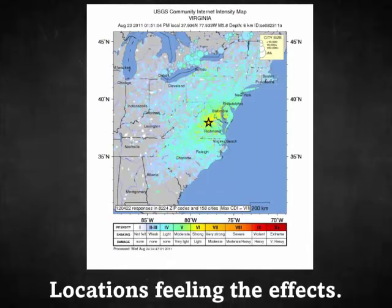This map shows the modified Mercalli scale, indicating the intensity and damage recorded or described by people. Up in East Hampton it was relatively mild — the aqua color, about intensity level 4, classified as light shaking with very little or no damage. Near the epicenter in Richmond it was more of a level 6, a strong earthquake with light damage. This gives an idea of the different amounts of damage felt throughout the country.